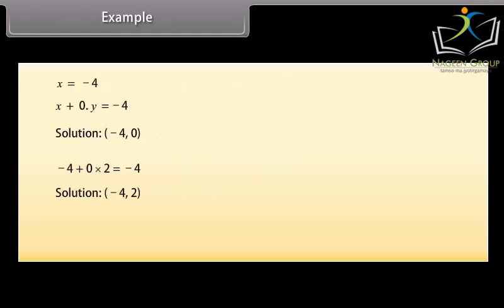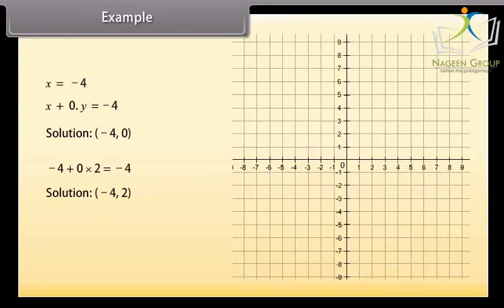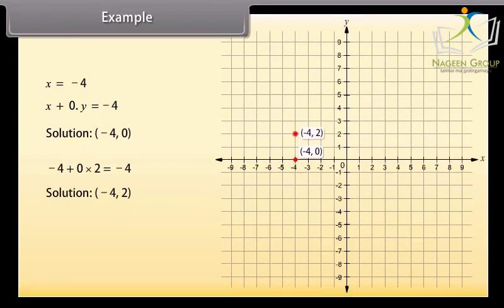Now mark these points on the graph: (−4, 0) and (−4, 2). Joining these points, we can see that the graph AB is a line parallel to the y-axis at a distance of 4 units to the left of it.